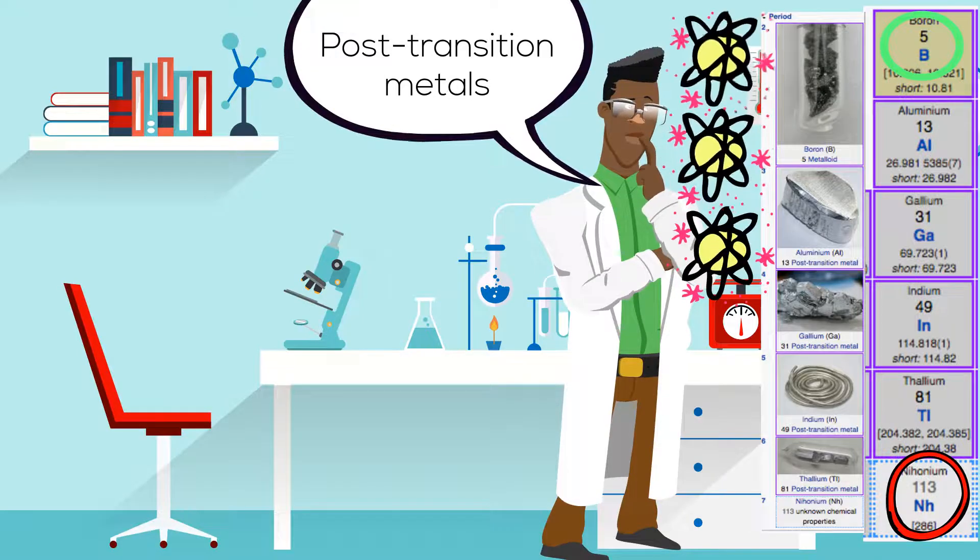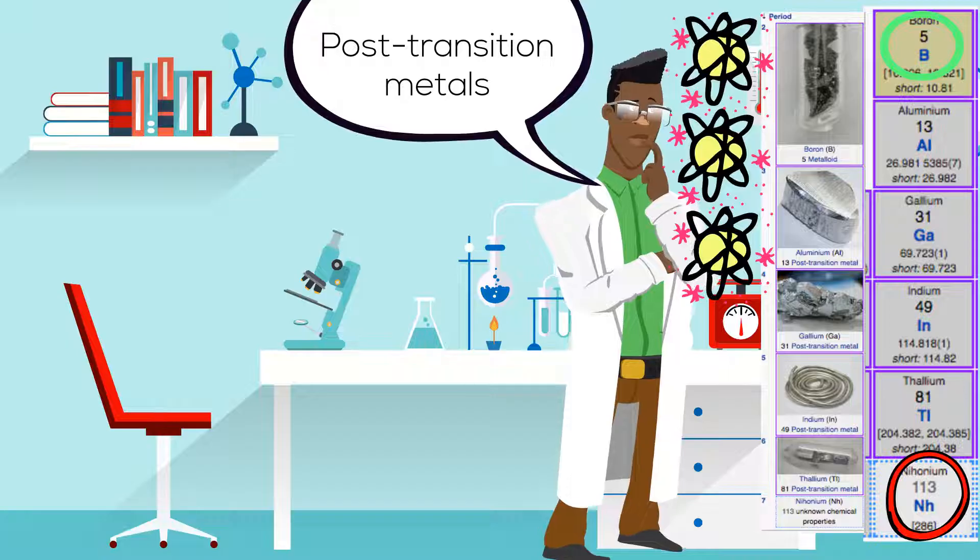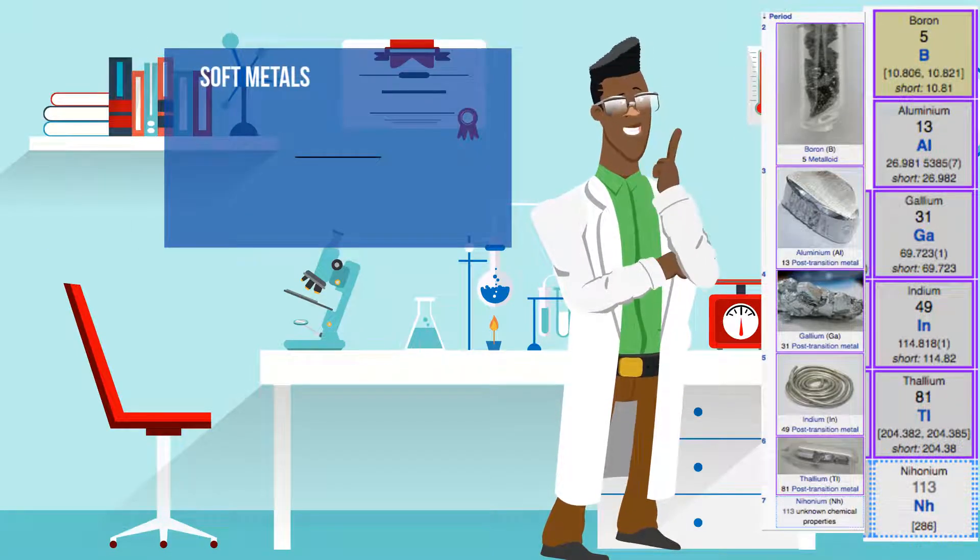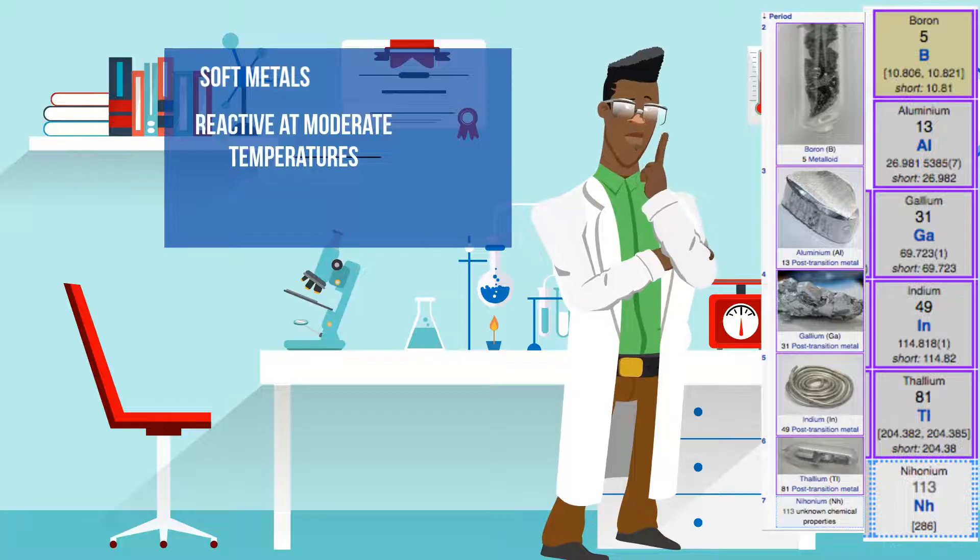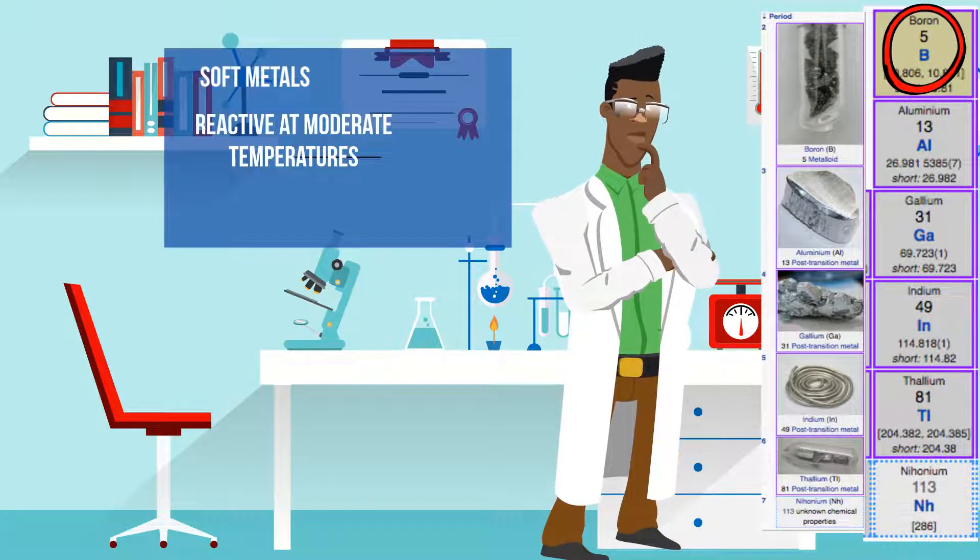All of the elements of the Boron Group have three valence electrons. The elements in this group, except for Boron, are soft. They are relatively reactive at moderate temperatures, except Boron is reactive at very high temperatures.